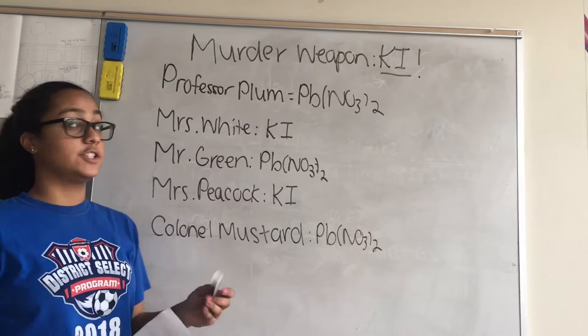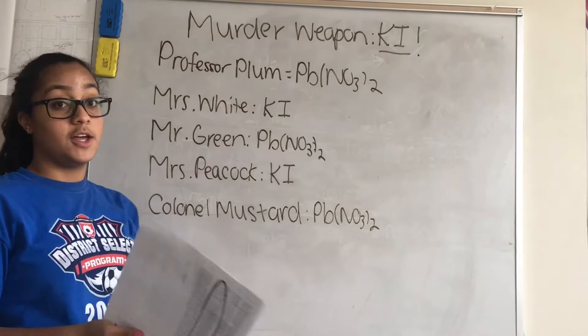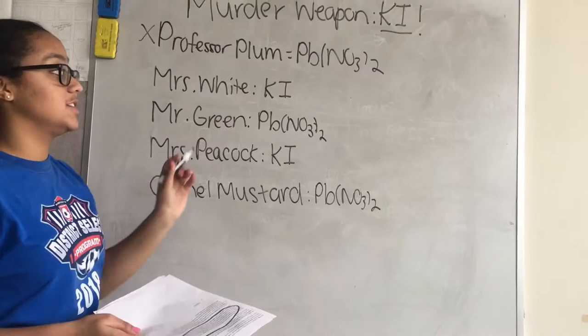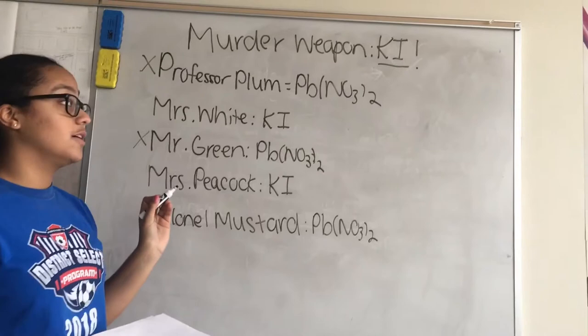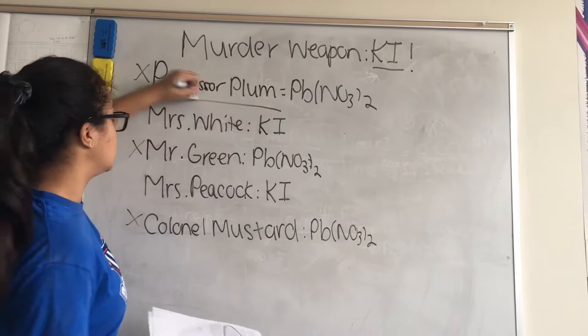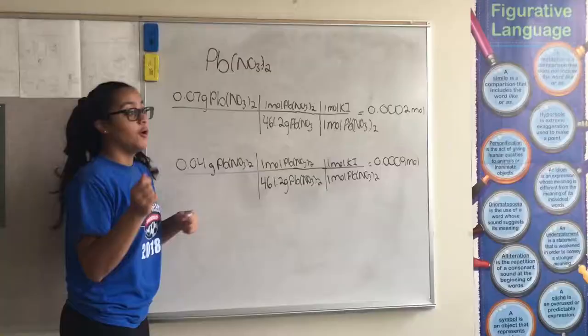After we did our reactions and found out our murder weapon was potassium iodide, we have to cross out our suspects. Professor Plum cannot be one of our murderers because he was dealing with lead two nitrate. Mr. Green can't be one of the suspects, and Colonel Mustard can't be one of the suspects. Which leaves us with Miss White and Miss Peacock.